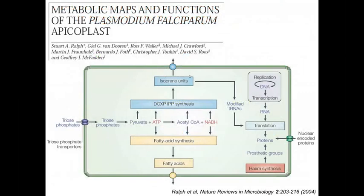Similar studies have led to what is now a complete metabolic pathway map for the apicoplast, carried out through the work of many laboratories, particularly in collaboration with my colleague Jeff McFadden in Melbourne and students and postdocs in his laboratory and mine. We now know that the apicoplast genome is replicated within the apicoplast, transcribed into RNA, and translated to produce a few proteins, which are combined with the bulk of the apicoplast proteins that are encoded in the nucleus and post-translationally imported. Those proteins combine to carry out three metabolic pathways.